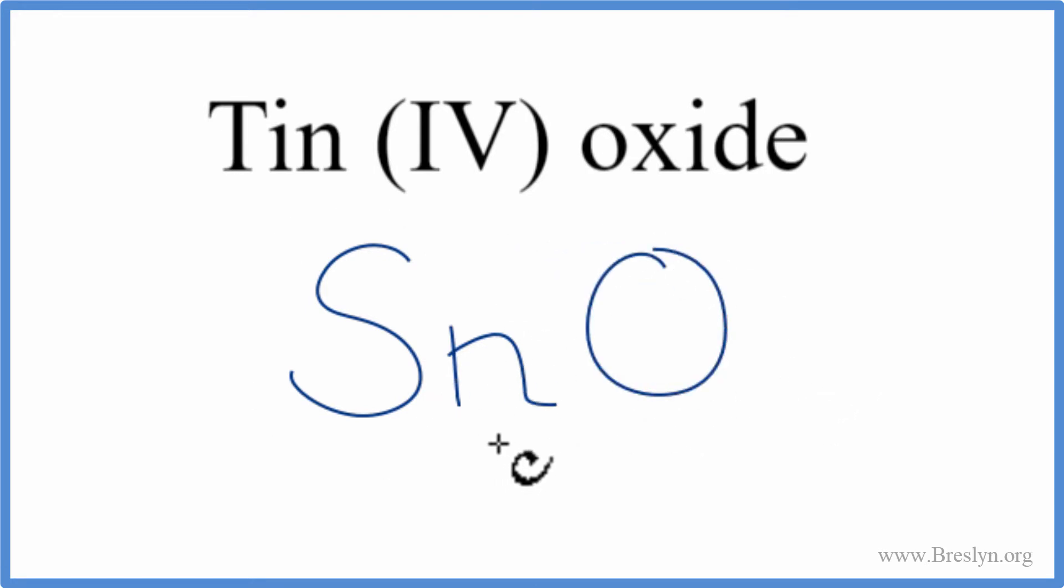Tin, that's a metal, it's a transition metal. Oxygen, that's a non-metal. So a metal and a non-metal, that's an ionic compound.